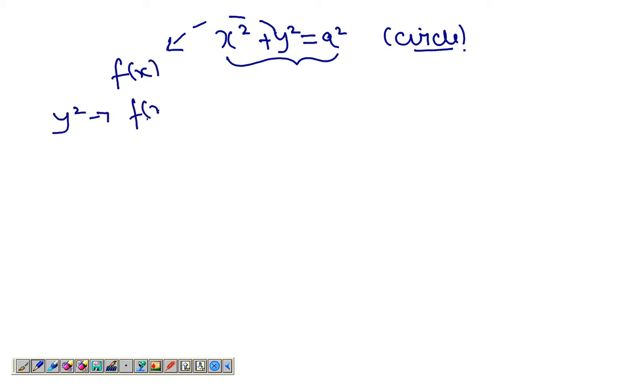We use implicit differentiation when we have equations like x² plus y² equals a². This is the general equation of the circle. The most important point here is that y is still a function of x, so y² is f(x)².